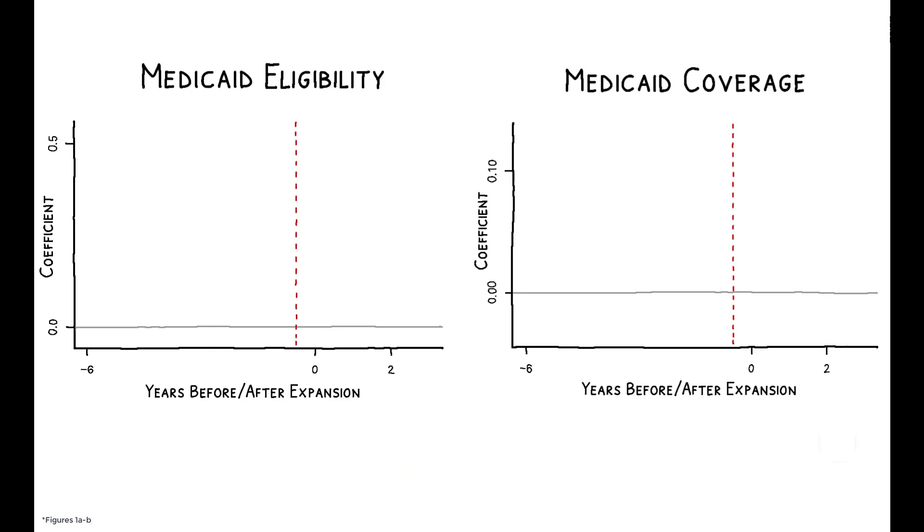These figures show the results for Medicaid eligibility and coverage. Up to six years before the expansion, trends are similar in expansion and non-expansion states, but outcomes diverge sharply in the post-period. Medicaid eligibility increases by over 40 percentage points in expansion states, while reported Medicaid coverage increases by 10.1 percentage points.